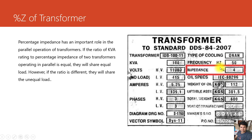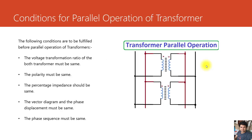The percentage impedance of a distribution transformer is less compared to power transformers. Percentage impedance has an important role in the parallel operation of transformers. If the ratio of the kVA rating to percentage impedance of two transformers operating in parallel is equal, they will share equal load. If the ratio is different, they will share unequal load. If the kVA ratings of both transformers are the same, they will share load inversely proportional to their percentage impedances.